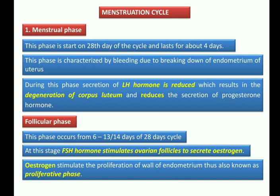To repeat: the follicular phase starts from day 6 to days 13 or 14 of the menstruation cycle. During this stage, FSH hormone secreted from the anterior pituitary stimulates the follicular cells. The Graafian follicle matures and secretes estrogen. This estrogen hormone stimulates the proliferation of the wall of the endometrium. Thus this phase is also known as the proliferative phase.